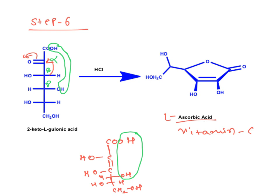As a result of this cyclic lactonization gives desired product L-ascorbic acid or vitamin C. And this is about the synthesis of vitamin C from D-glucose.